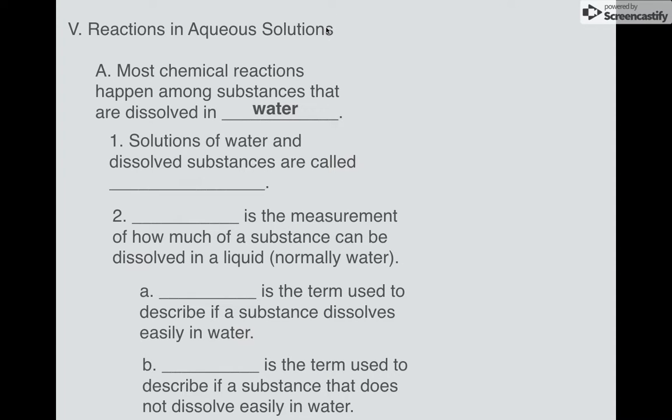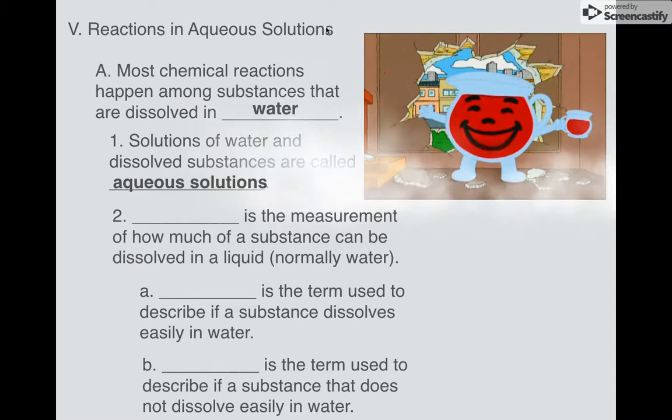So in order to answer this question, the first thing that we need to look at is aqueous solutions. Keep this in mind - most chemical reactions happen when you mix substances that have been dissolved inside of water. Picture this: you have two ionic substances. Remember, ionic substances form crystals. They form solids normally. So let's say I have two powders.